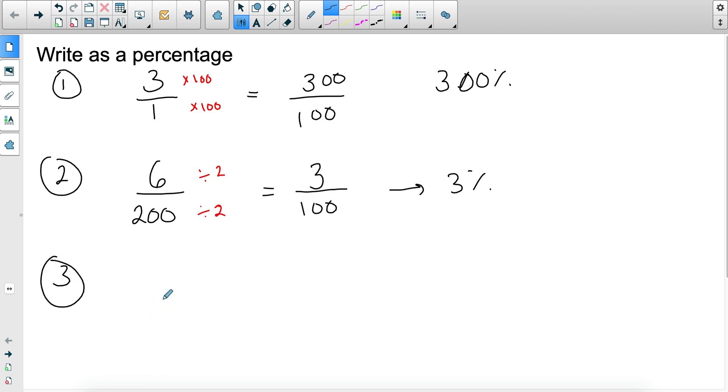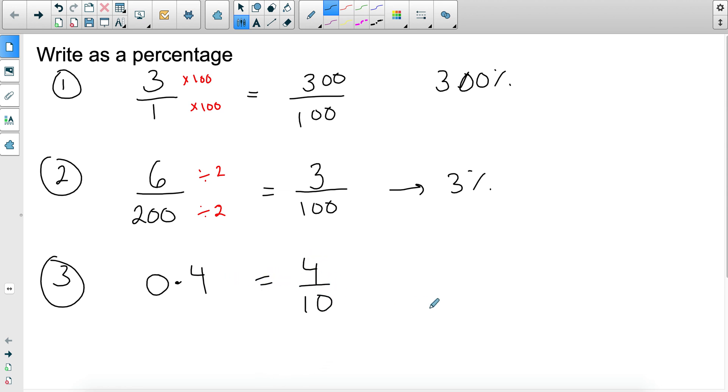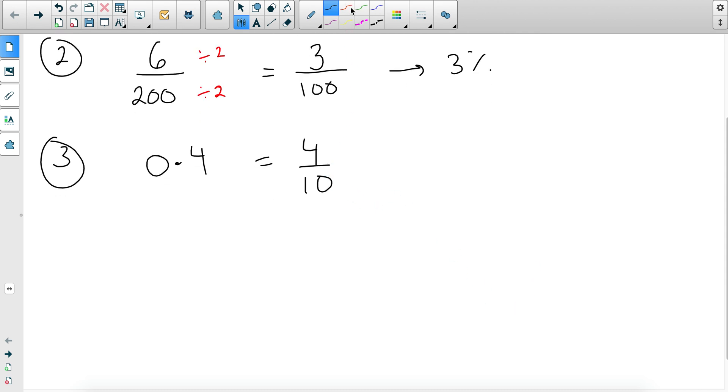Another example is when you have a decimal, so say 0.4. Terminating decimals are nice. What I mean by terminating is that they don't continue forever. They're nice because you can easily change them to fractions. So 0.4 is the same as 4 over 10. And so I can change the denominator to 100 by multiplying by 10, and the numerator by 10, and I get 40 over 100, which is basically 40%.